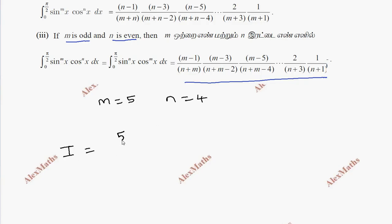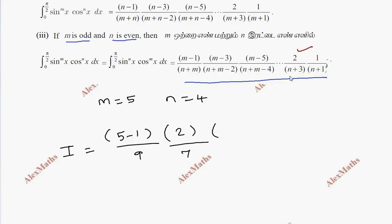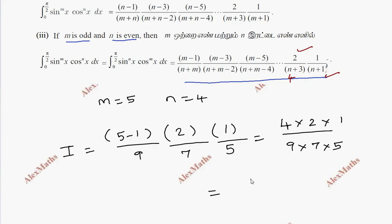i equals 5 minus 1 divided by n plus n, which becomes 9. The value of m minus 3 is equal to 2, and m minus 2 is equal to 7. Then the total denominator is equal to 4 into 2 into 1, and the numerator is equal to 9 into 7 into 5. This gives 8 divided by 315.